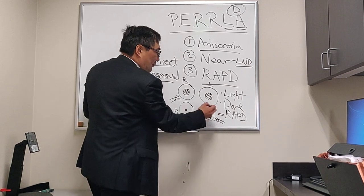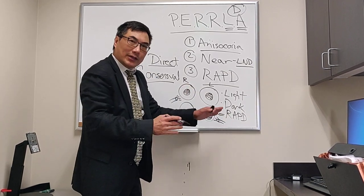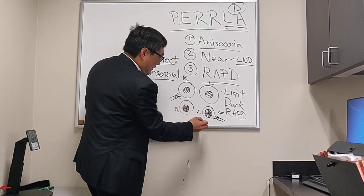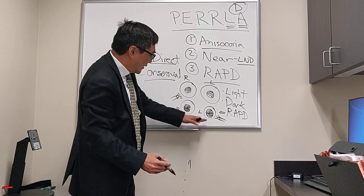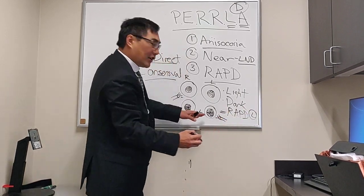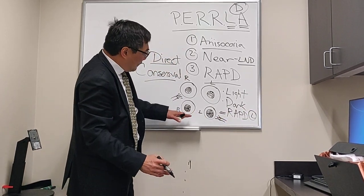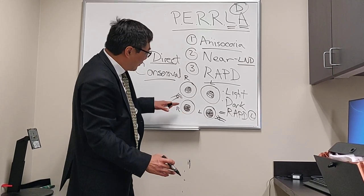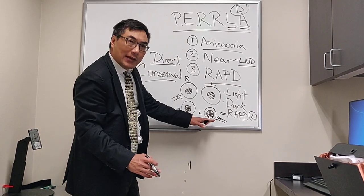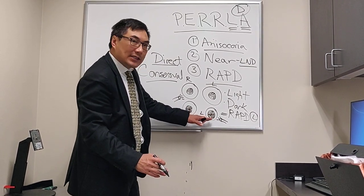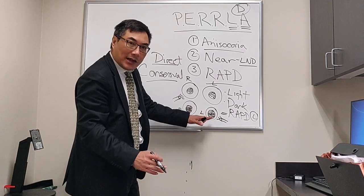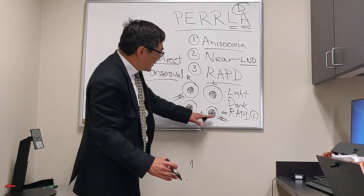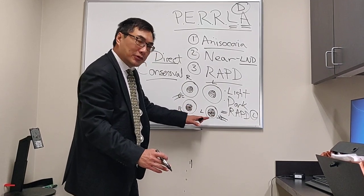That we call a relative afferent pupillary defect — because relative to the fellow eye, the afferent system in the pupil pathway has been damaged. What's interesting is both pupils are actually dilating when you swing the light from the right to the left in a patient who has a left RAPD. Most residents will say the left pupil dilates, which is true, but the correct answer is both pupils are dilating because they're connected.